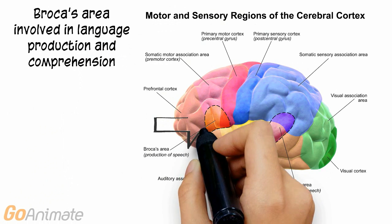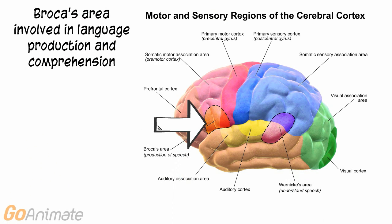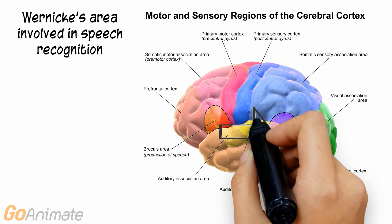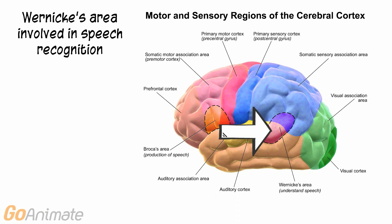Here are a couple of special areas in the brain. Broca's area is involved in language production and comprehension. Wernicke's area is involved in speech recognition. We hope you have learned something about the brain and see you next time.